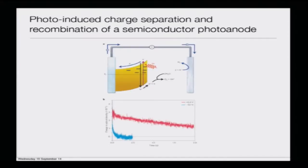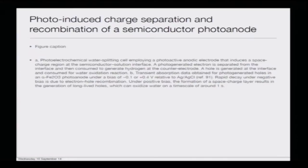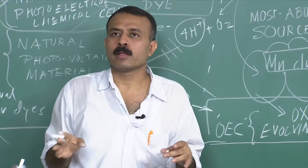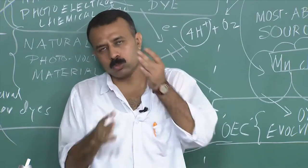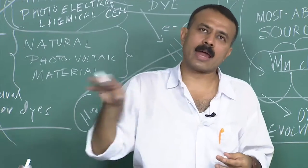Please go through the paper references I have given, because they will give you a better idea of what developments have happened in this area. This diagram shows photo-induced charge separation and recombination of a semiconductor photoanode — the basic fundamental principle of a photoelectrochemical cell — where you have an interface of a semiconductor and an electrolyte where water splitting takes place. The photo-generated electron is separated from the interface and consumed to generate hydrogen at the counter electrode; a hole is generated at the interface and consumed for the water oxidation reaction.